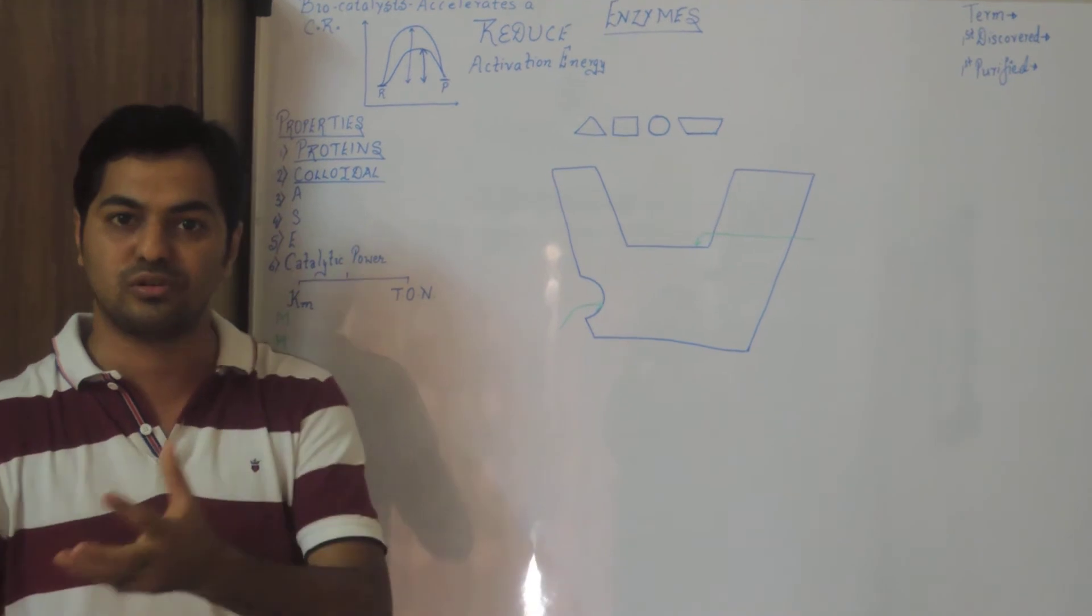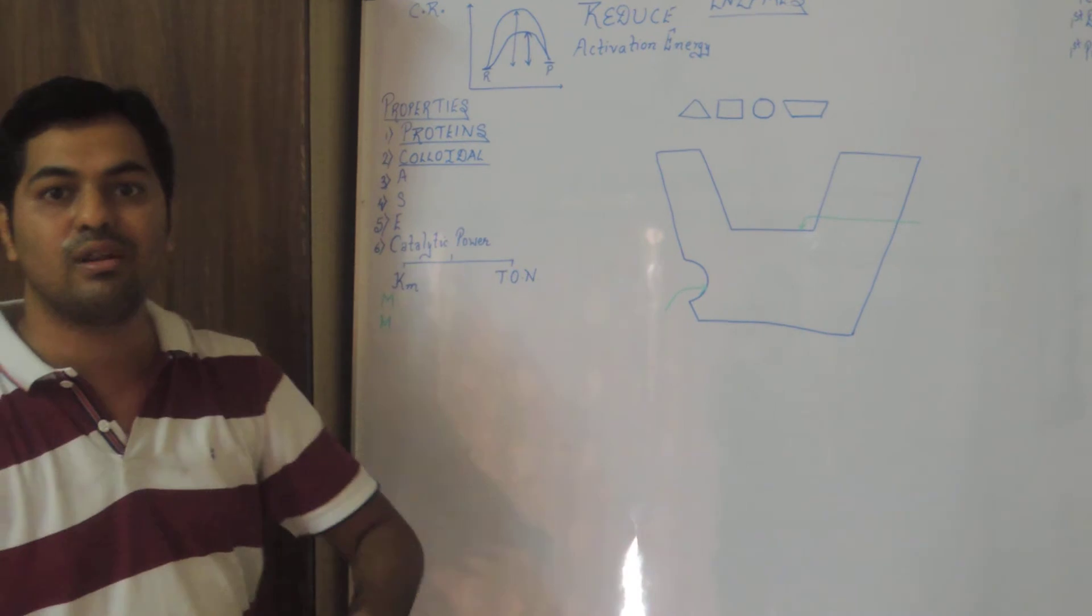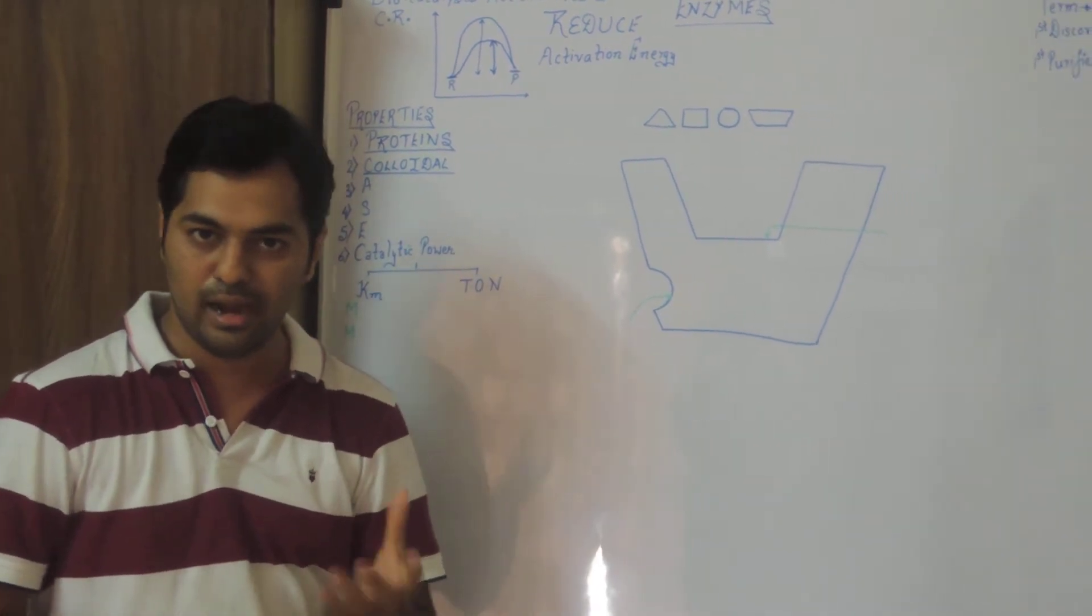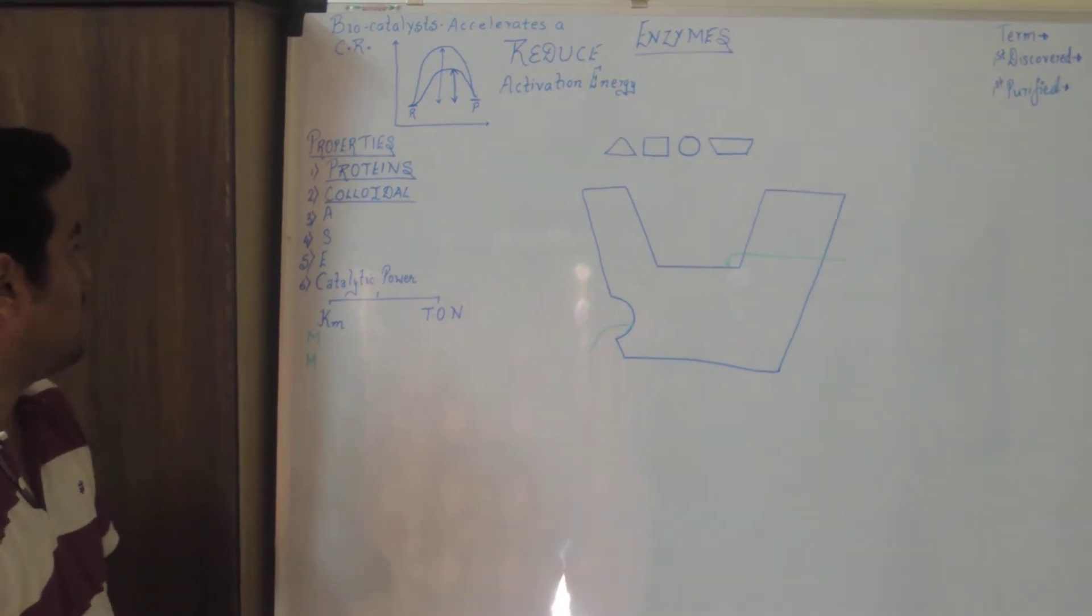So basically enzymes have such colloidal nature, wherein they have a large surface area and it allows many reactants to be converted into product at simultaneous time.